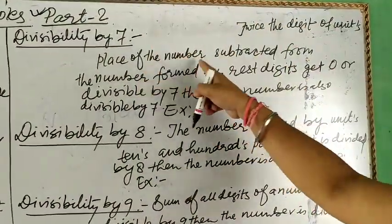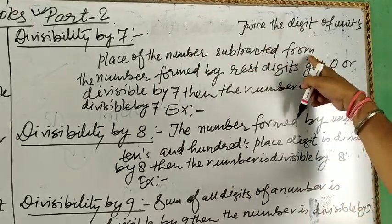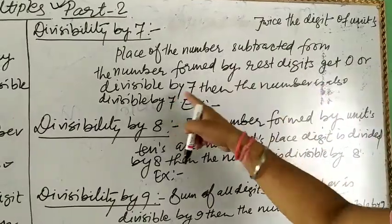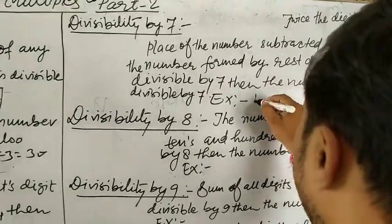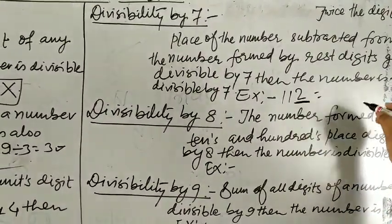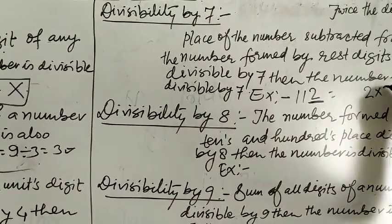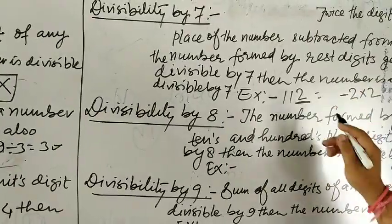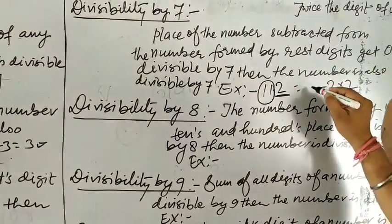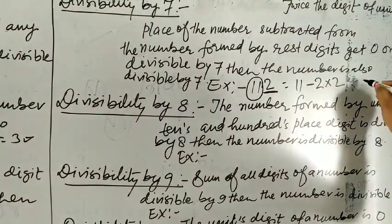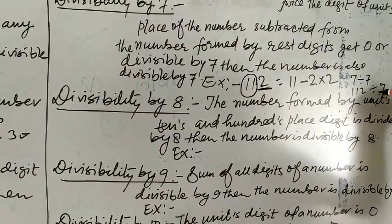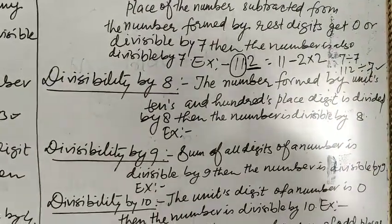Twice the digit of unit's place of a number subtracted from the number formed by the rest digits gives 0 or is divisible by 7. For example, 112: its unit's digit is 2, so 2 times 2 minus the rest digits, that's 11 minus 4 equals 7, which is divisible by 7. So 112 is divisible by 7.